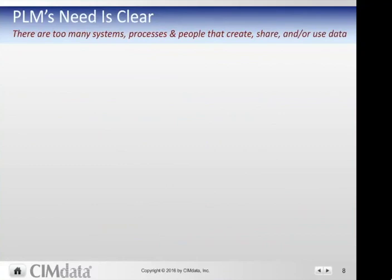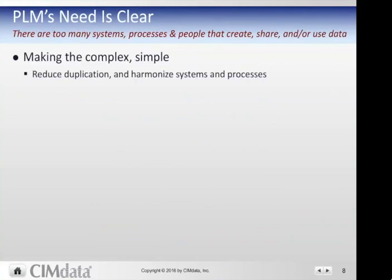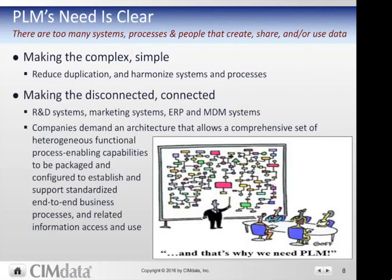PLM's need is clear. There are simply too many systems, processes, and people that create, share, and use product information. PLM is about making the complex simple — reducing duplication and harmonizing systems and processes. It's about making the disconnected connected, bringing together the information set throughout an organization to support decisions from concept through life, connecting heterogeneous systems from an end-to-end perspective to connect those processes and information sources.